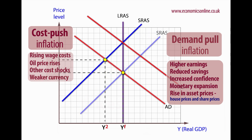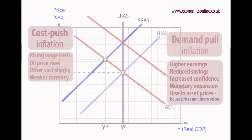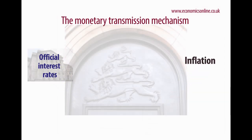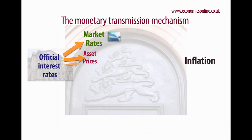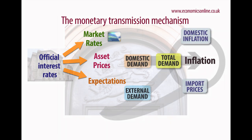Tighter monetary policy is often seen as the most effective way to deal with inflation. Higher interest rates work their way into the economy through the monetary transmission mechanism. An increase in the official base rate will raise interest rates throughout the economy, such as credit card and overdraft rates. Asset prices are reduced, creating a negative wealth effect, which lowers expectations and suppresses spending.